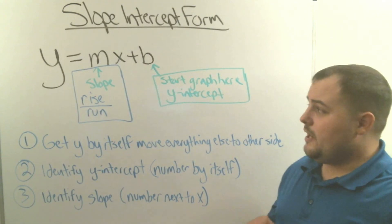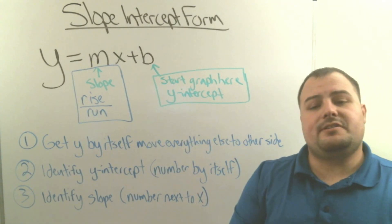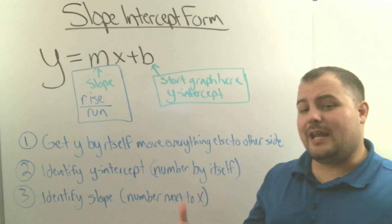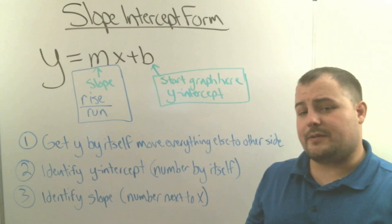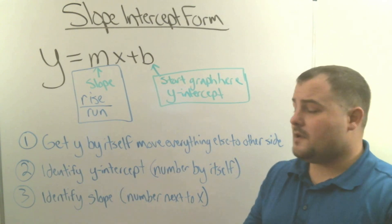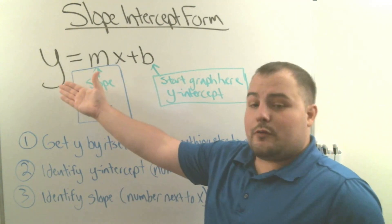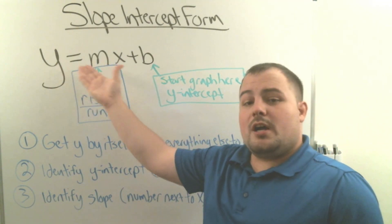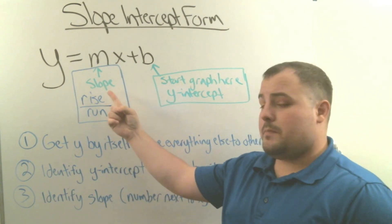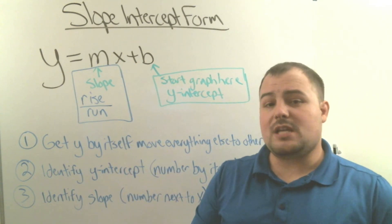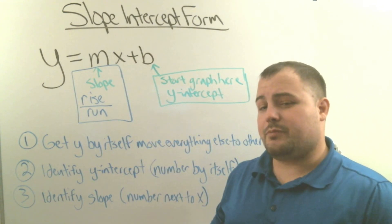Slope-intercept form — we have a few things that we need to know. Slope-intercept form is an equation of a line in algebra, and if we have something in slope-intercept form, it's always going to make a straight line. In slope-intercept form, the equation is y equals mx plus b. The m stands for your slope, and slope tells you your rise over run. That's what we learned in the previous lesson.